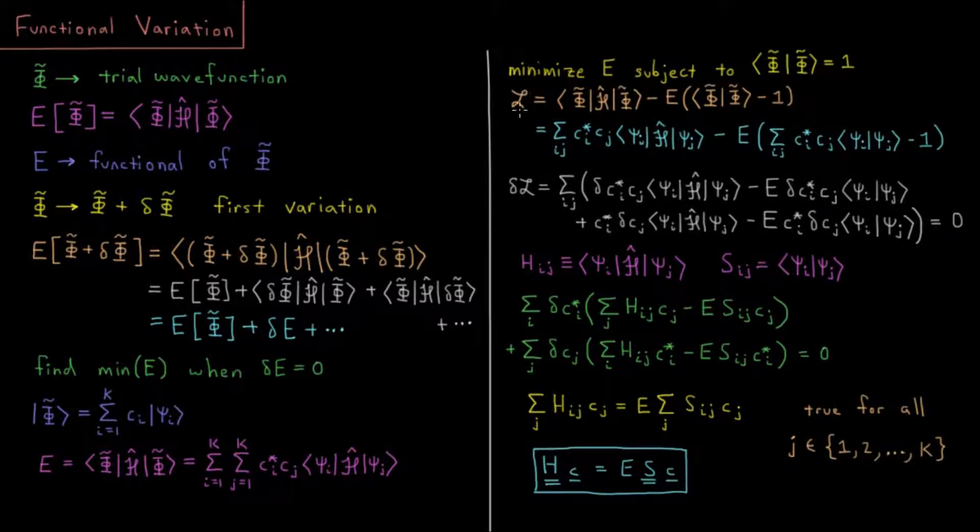We're going to enforce that by using a Lagrangian for this. If you're not familiar with Lagrangians or Lagrange multipliers from calculus, you can look that up. We're going to define our expectation value for the energy minus a Lagrange multiplier, which I'm going to call E, times our overlap of our wave function with itself, which in principle should be one, and then subtract one from that as well.